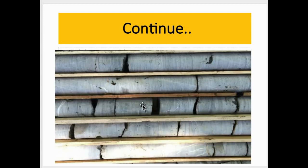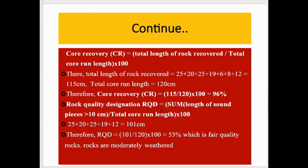Let's take another example for better understanding. Suppose we have found this core from a borehole. First we find the core recovery: core recovery equals total length of rock recovered divided by total core run length, multiplied by 100. The core pieces are 25 cm, 20 cm, 25 cm, 19 cm, 6 cm, 8 cm, and 12 cm, totaling 115 cm. The total core run length is 120 cm. So 115 divided by 120 times 100 equals 96% — this is the actual core recovery.